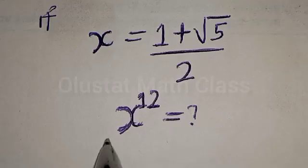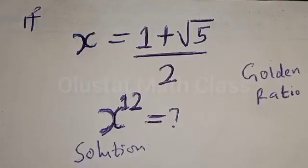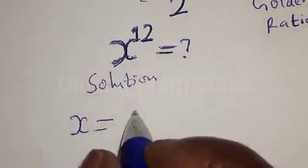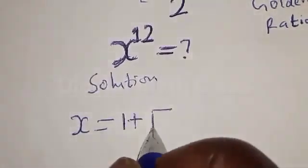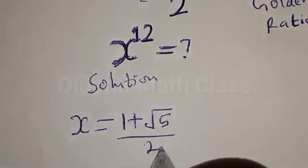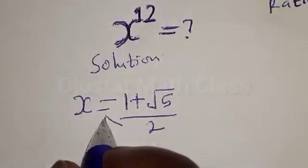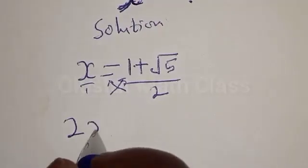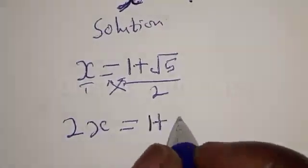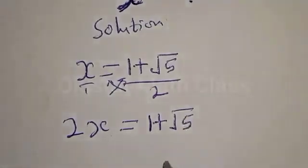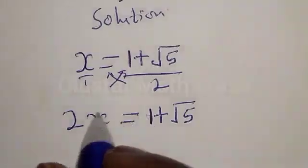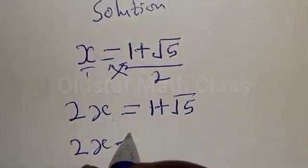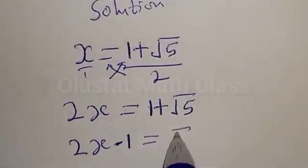From here we have s equal to 1 plus square root of 5 divided by 2. Let's cross multiply. Since it's over 1, we have 2s equal to 1 plus square root of 5. Then let's bring this 1 to this side: we have 2s minus 1 is equal to square root of 5.